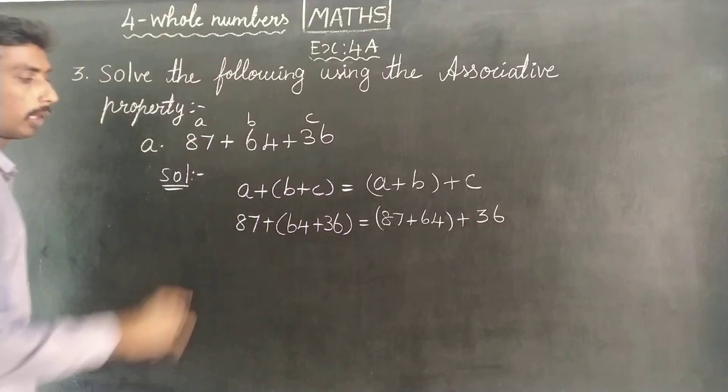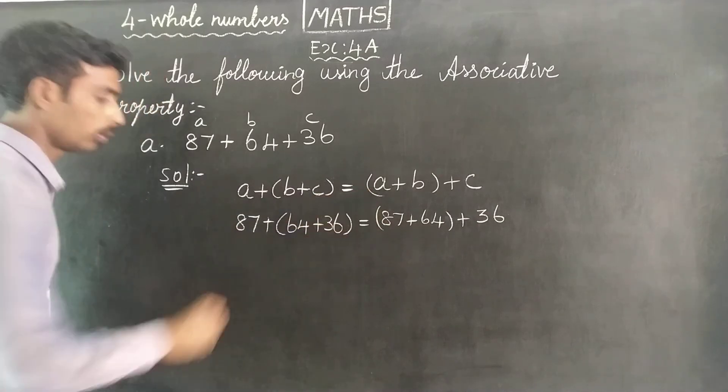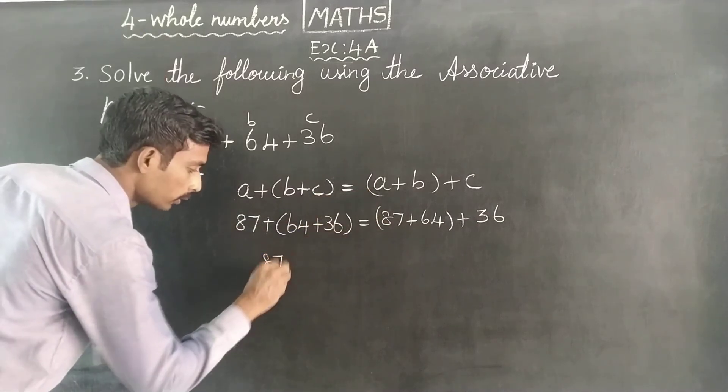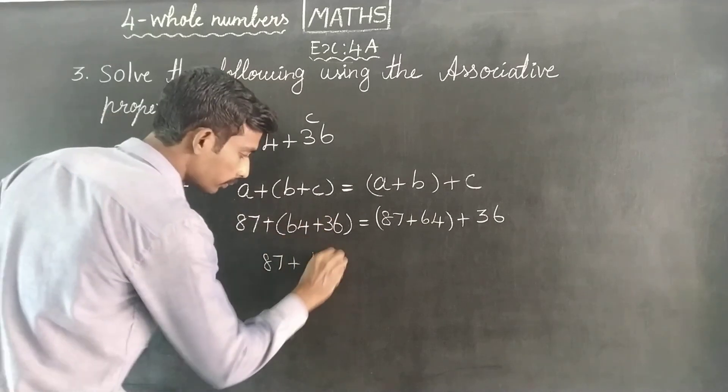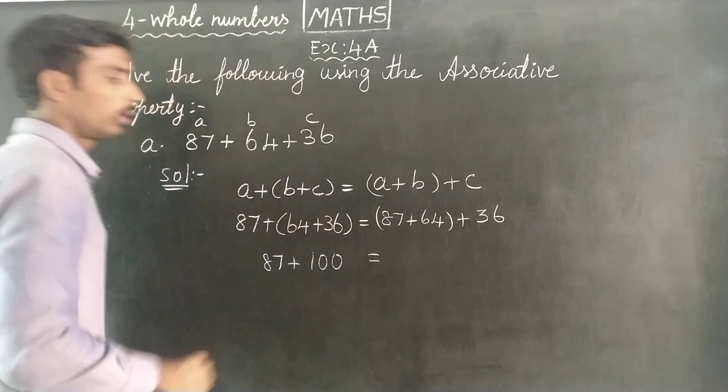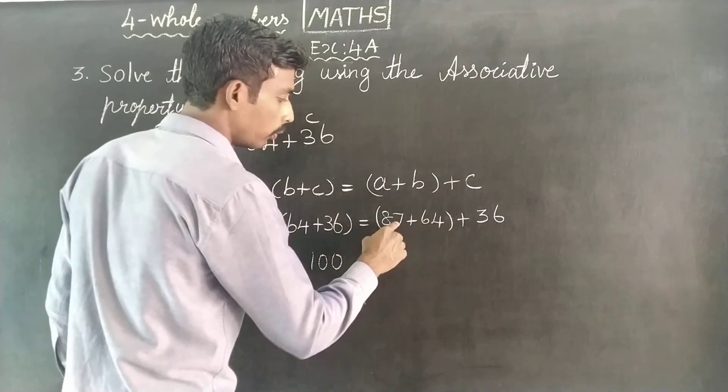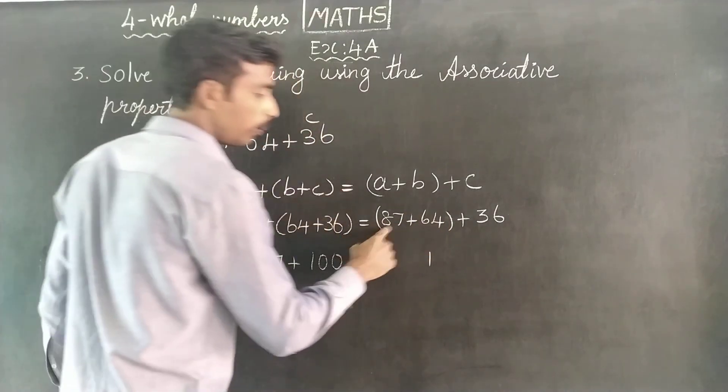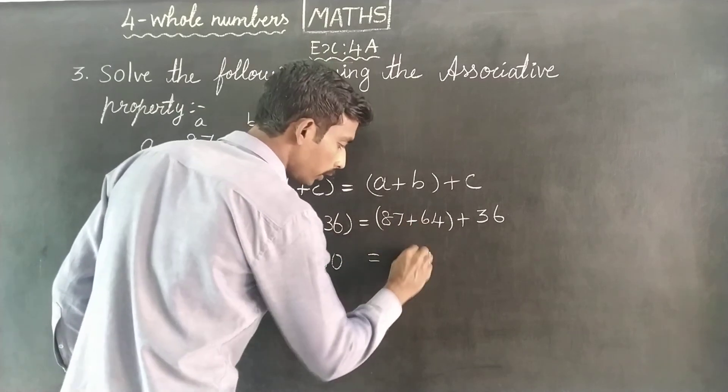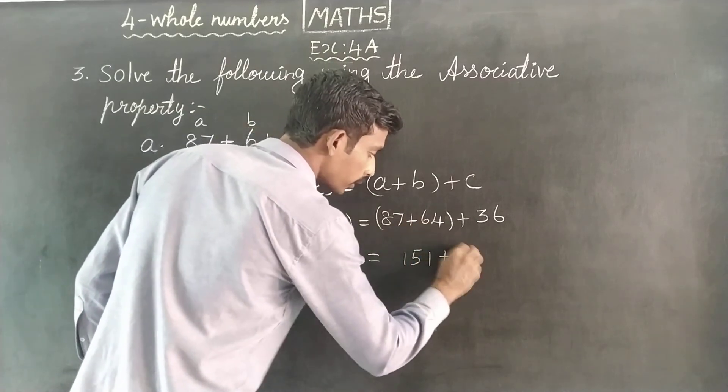So you will have a round bracket, so 87 plus 64 plus 36, 100, equals 87 plus 64. 7 plus 4, 11, that is 1. 8 plus 6, 14 plus 1, 15. 151 plus 36.